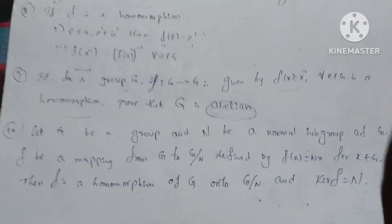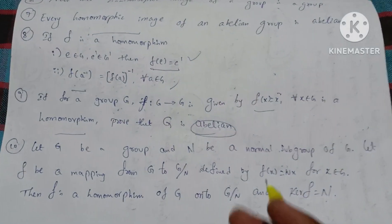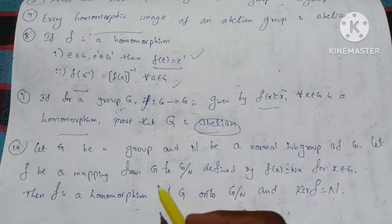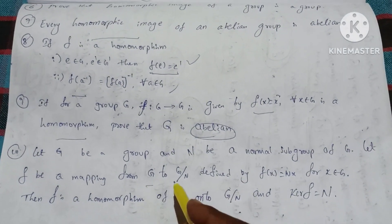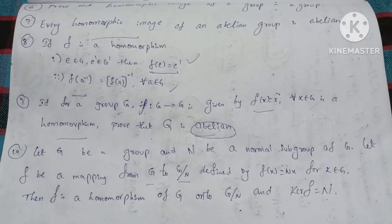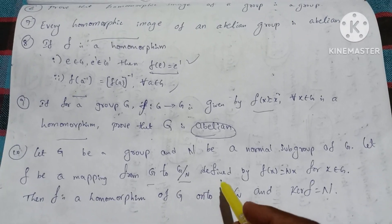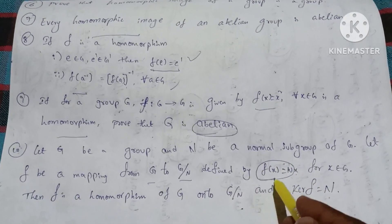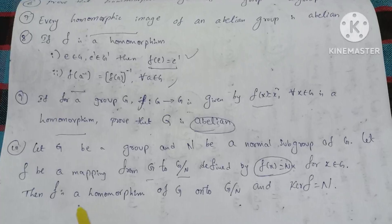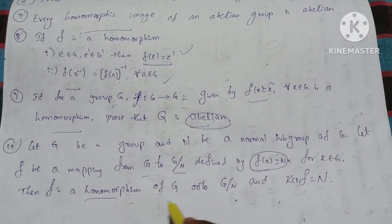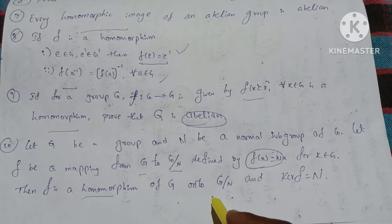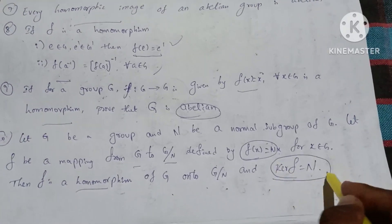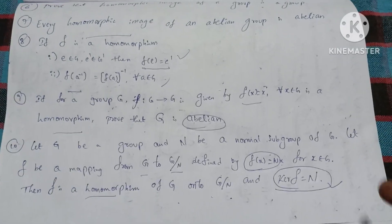Tenth question: Let G be a group and N be a normal subgroup. Let G and G by N be two groups. Define F by F of X equal to NX. Then F is a homomorphism from G onto G by N, and the kernel of F is equal to N. Let us prove these 10 solutions.